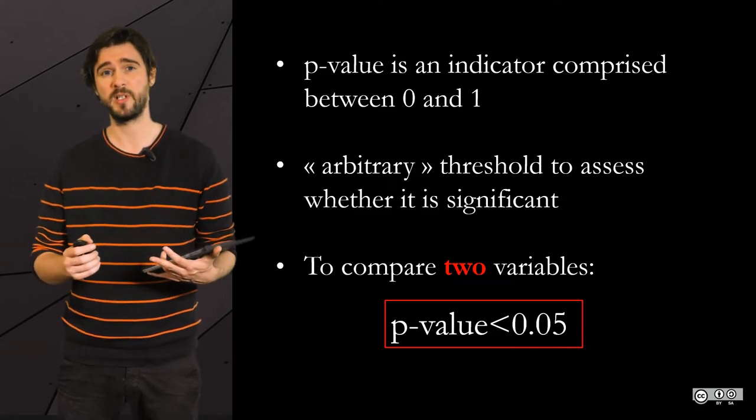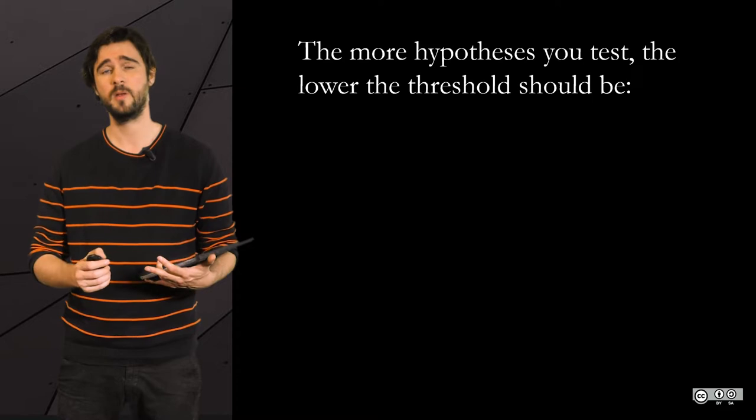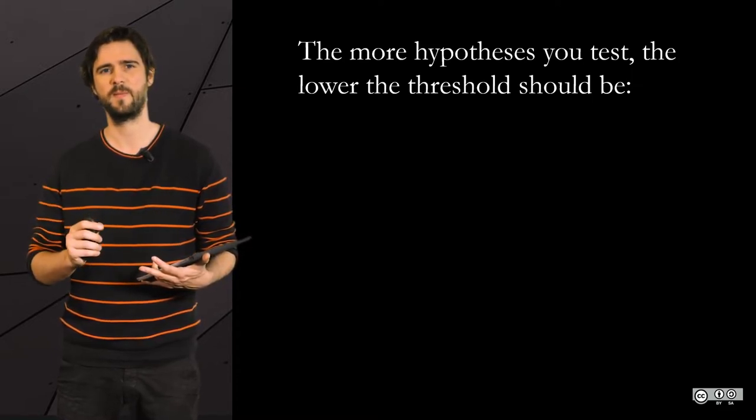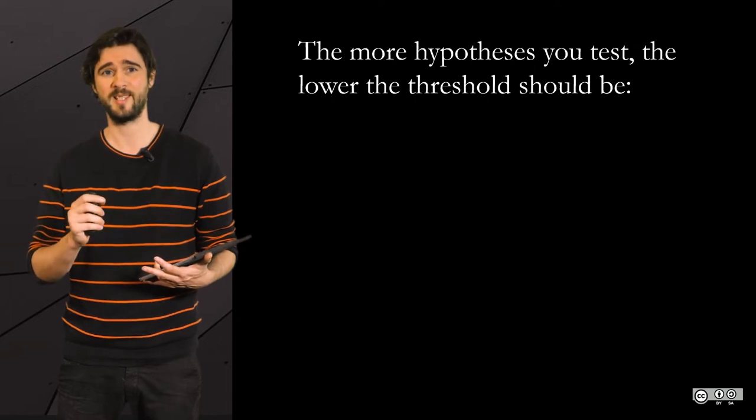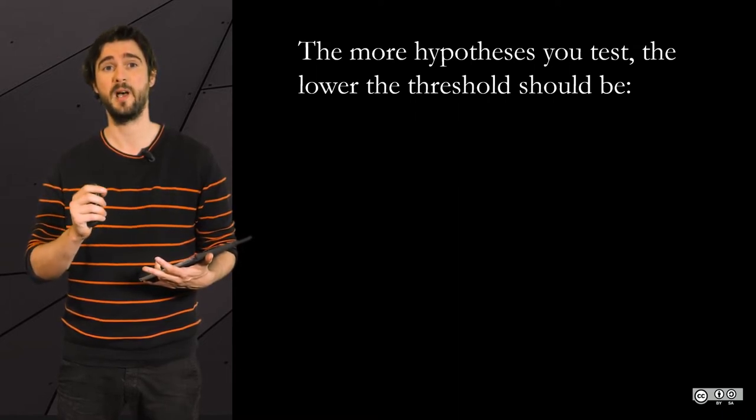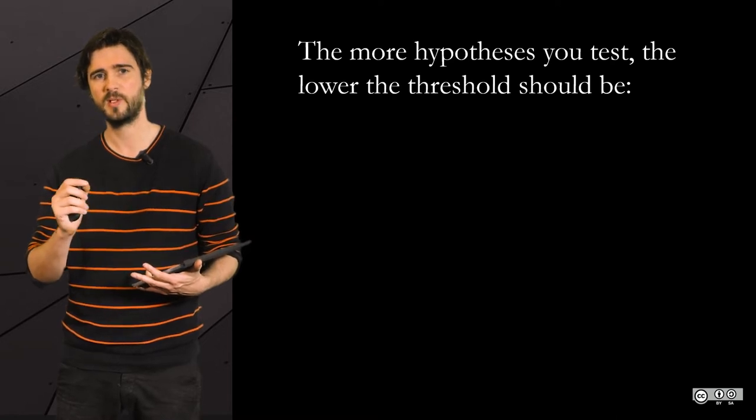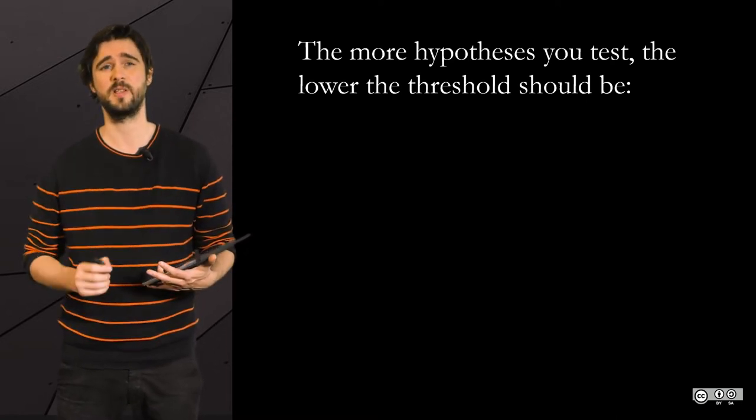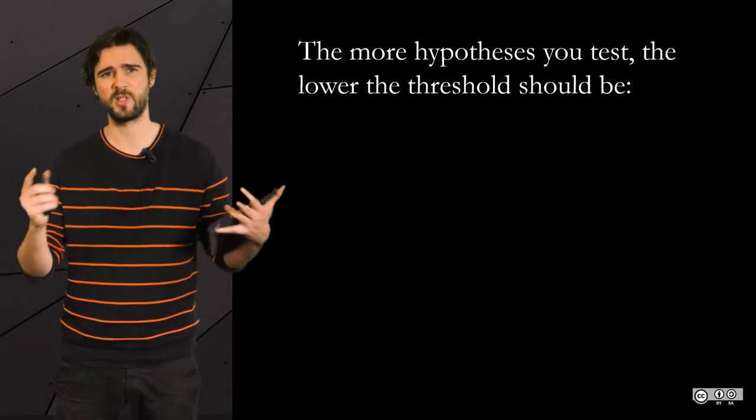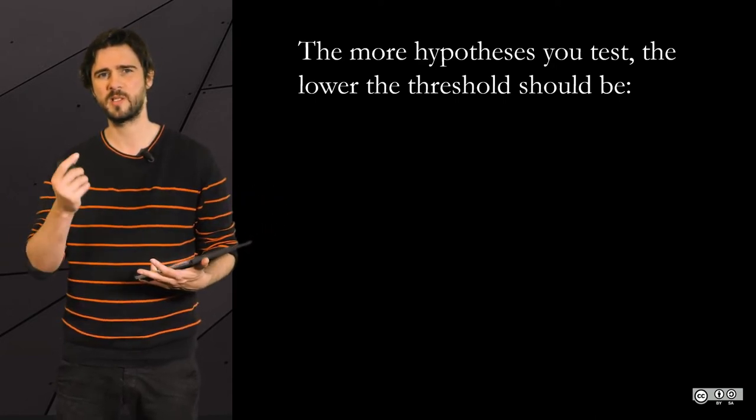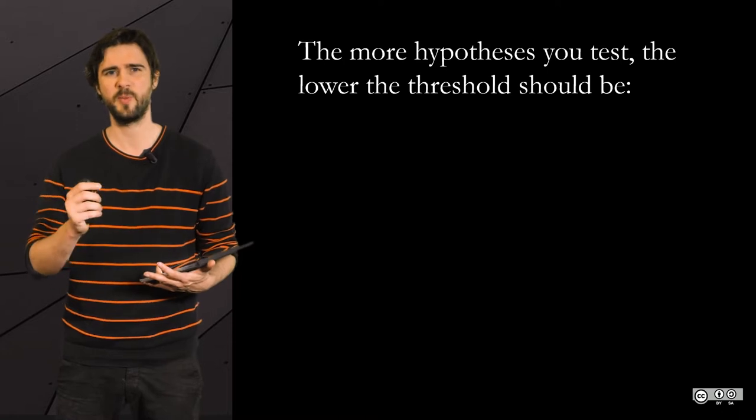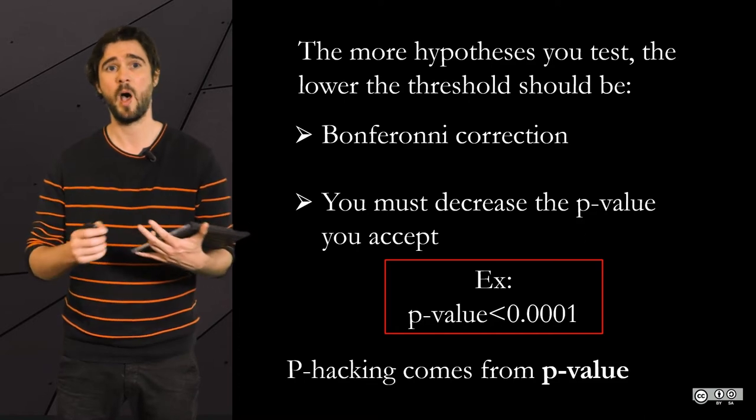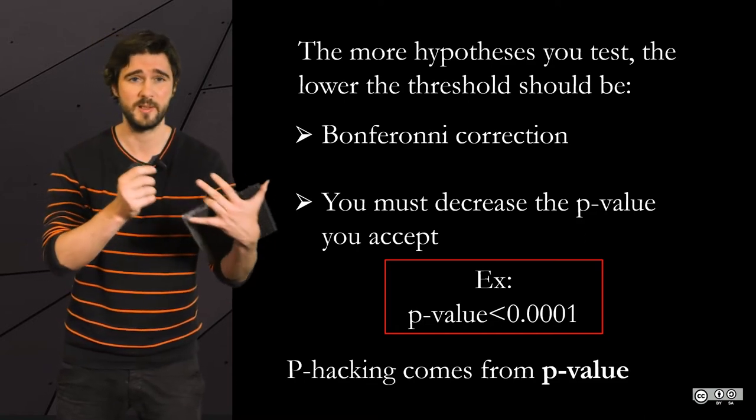If you are performing multiple comparisons at the same time, however, you cannot take this threshold of 0.05. By the way, this is the reason why data dredging is also called p-hacking, because of the hunt for p-values below 0.05. But 0.05 isn't good enough when you do multiple comparisons. You must consider lower thresholds, like 0.005 or 0.0001. It depends on how many comparisons, how many hypotheses you are testing at the same time.